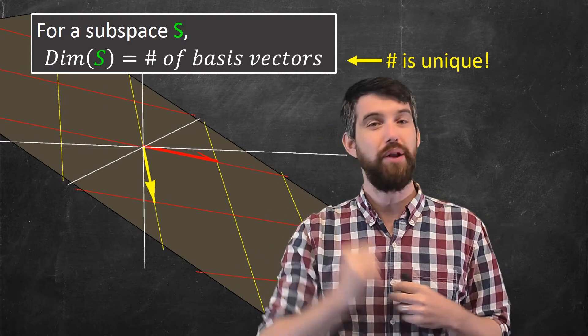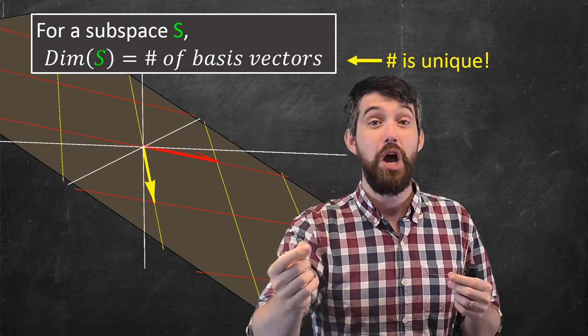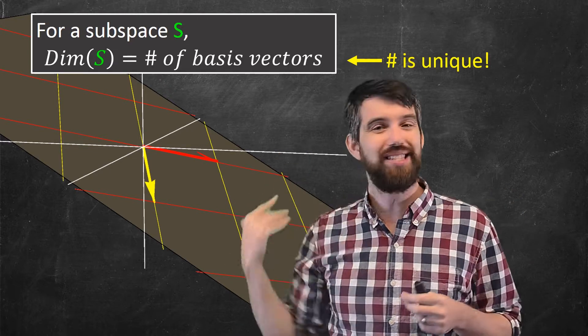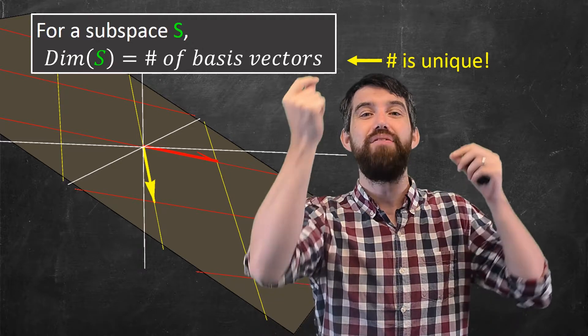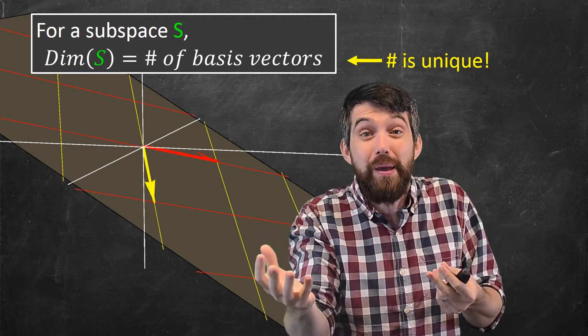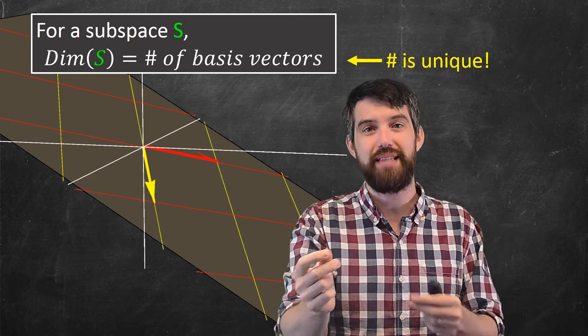Now, you and I may disagree a little bit. We may have different vectors in our bases. However, if it's the same subspace, you and I have to have the same number of basis vectors. What the vectors are may be different, but the number of them is the same.